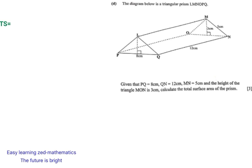So I'm going to write: total surface area equals the area of each rectangle forming this triangular prism. I'll start with the base rectangle PQNO, then plus the rectangle on the right side LQNM, then plus rectangle PLMO, then plus the area of the two triangles.